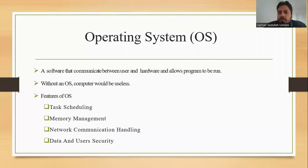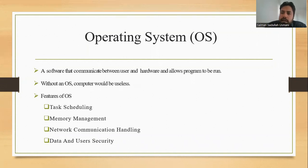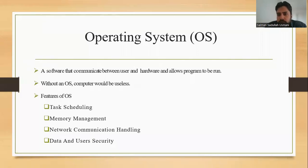What is an operating system? In simple terms, it is software that communicates between the user and hardware and allows programs to be run. It is the middleman between you and your hardware. In other words, if your PC or laptop doesn't have an operating system, it's essentially a black box — a useless thing. Your hardware must have a working operating system to be called a computer.